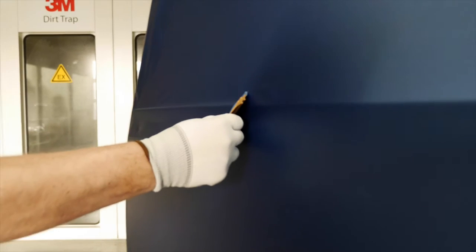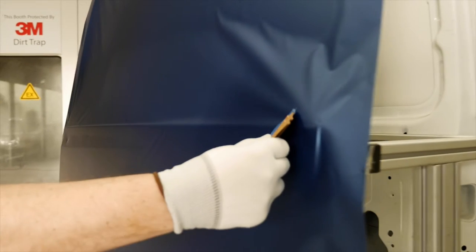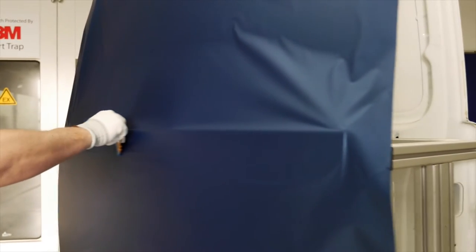Start by fixing the film at the bottom of the panel using the recommended 3M Gold Squeegee with the soft thin sleeve that applies the right amount of pressure.